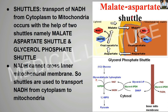This malate enters inside the mitochondrial matrix and helps in the reduction of NAD+, converting it into NADH. This NADH is now inside the mitochondrial matrix — it has crossed the inner mitochondrial membrane.